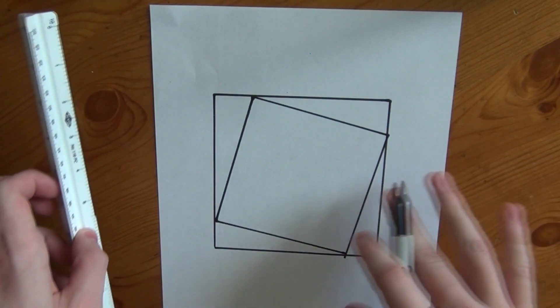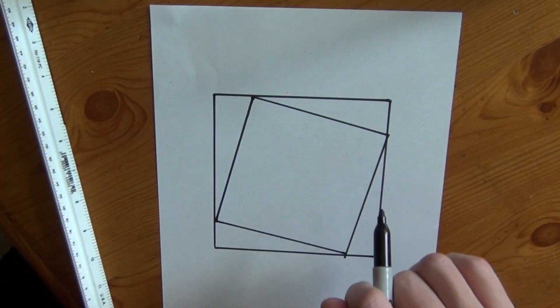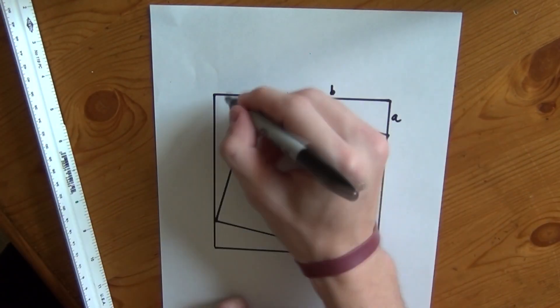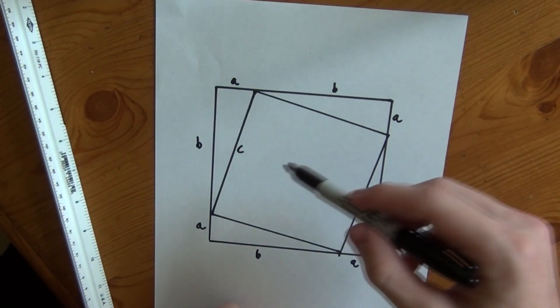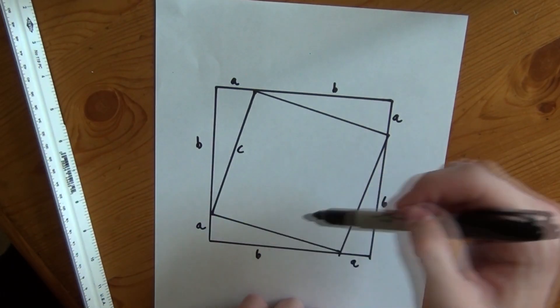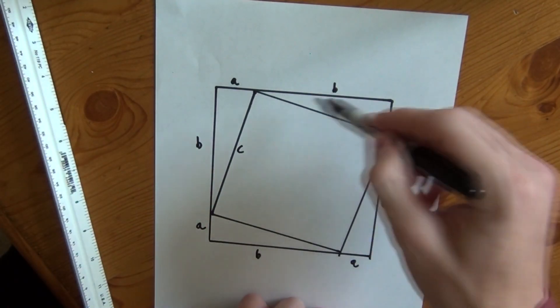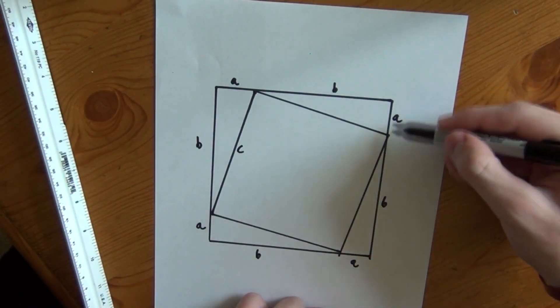Now you want to label all the sides using A, B, and C. The size of this one here is going to be C. B is the longer side on the outside. A is the short side here.